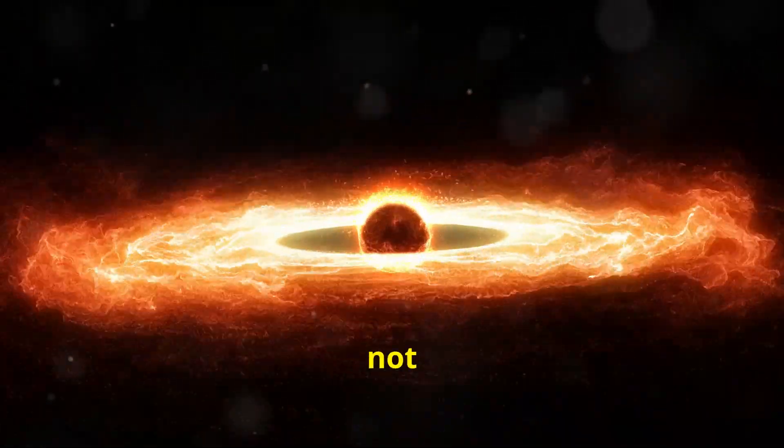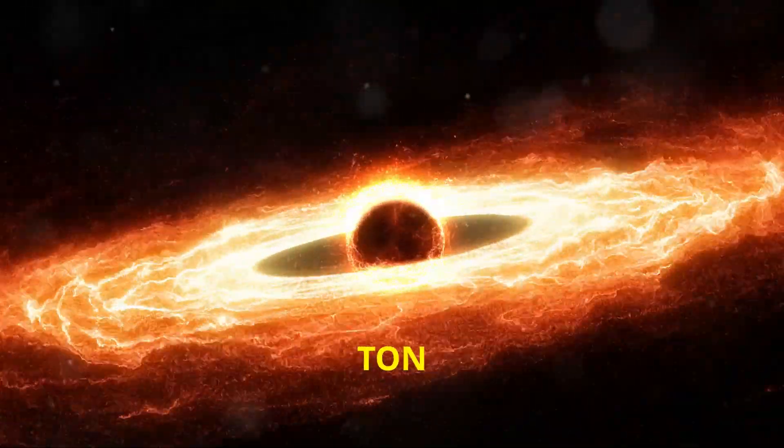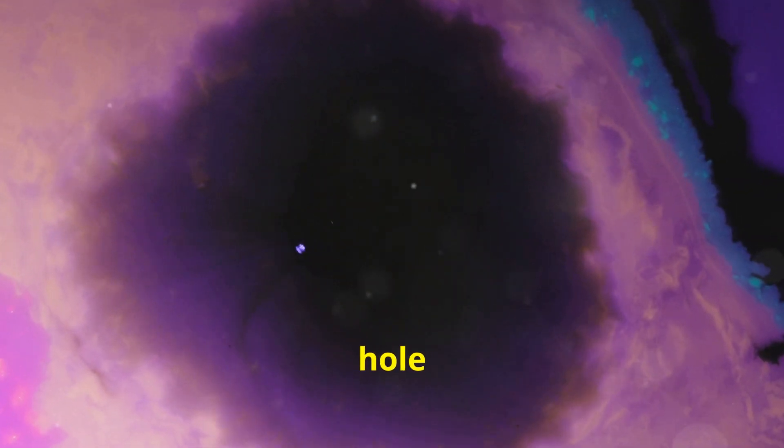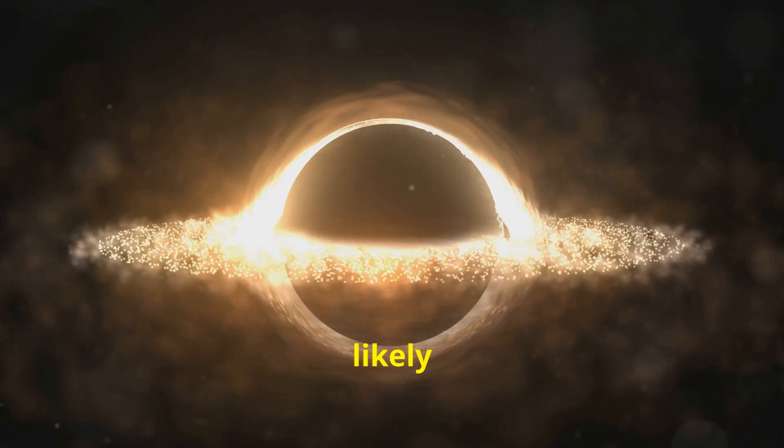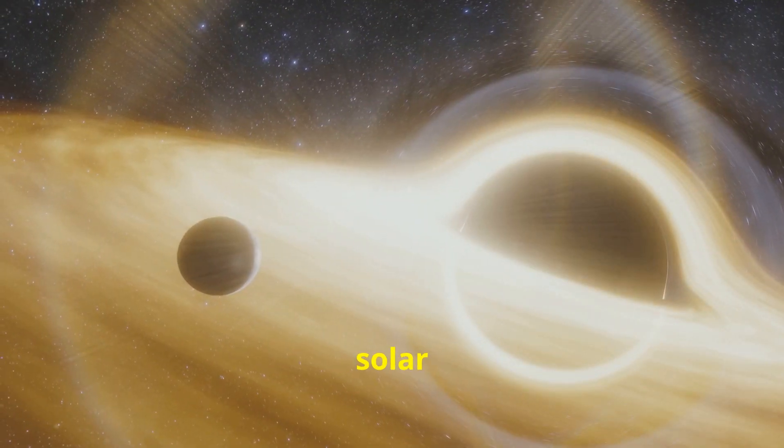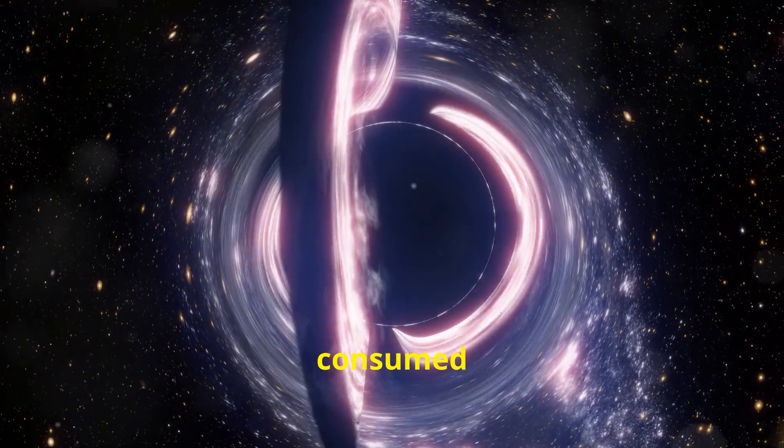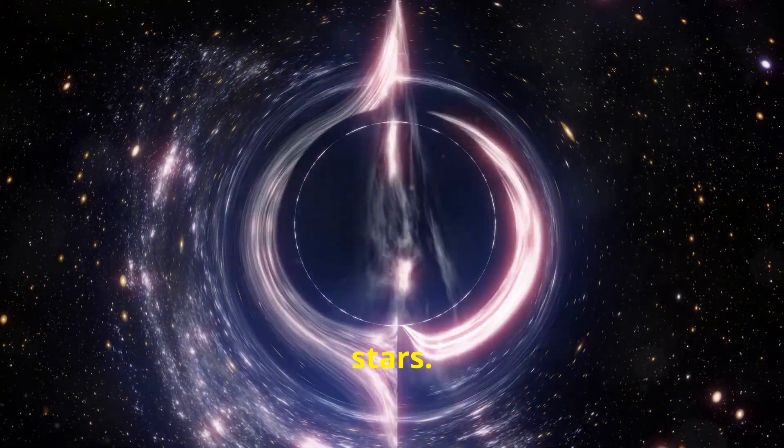One of, if not the largest known black holes in the observable universe is Ton 618. This black hole is at least 240 billion miles in diameter and likely much bigger as it is still growing. That's roughly 11 solar systems side by side. Galaxies worth of matter are consumed by this beast as it shines with the brightness of 100 trillion stars.